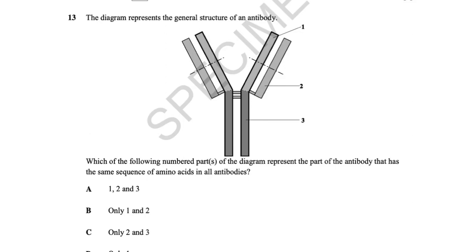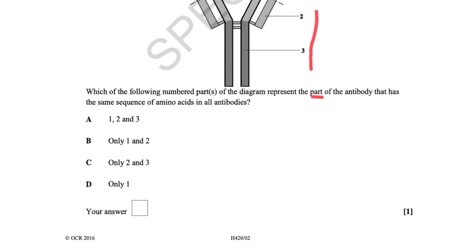A diagram represents the general structure of an antibody. In an antibody, the variable region is complementary to the antigen — and antigens vary. Then there is a constant region (regions two and three) which is the same in all antibodies. The question asks which numbered parts represent the part with the same amino acid sequence in all antibodies. The answer is C.